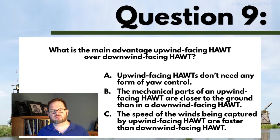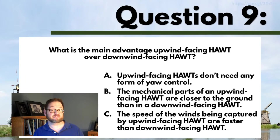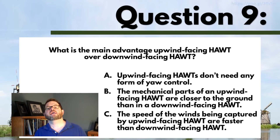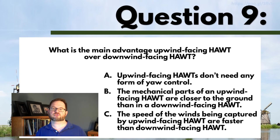Is it A, upwind facing HAWTs don't need any form of yaw control? B, the mechanical parts of an upwind facing HAWT are closer to the ground than with a downwind facing HAWT? Or is it C, the speed of the winds captured by an upwind facing HAWT are faster than a downwind facing HAWT?